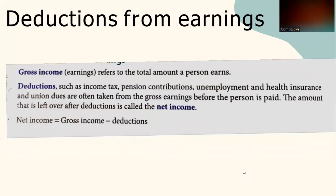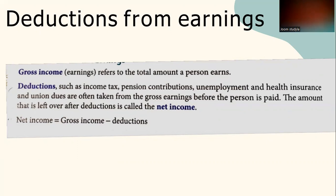Deductions from earnings: gross income refers to the total amount a person earns. Deductions such as income tax, pension contributions, unemployment and health insurance, and union dues are often taken from the gross earnings before the person is paid. The amount left over after deductions is called net income. The formula to calculate net income is: Net Income = Gross Income − Deductions.